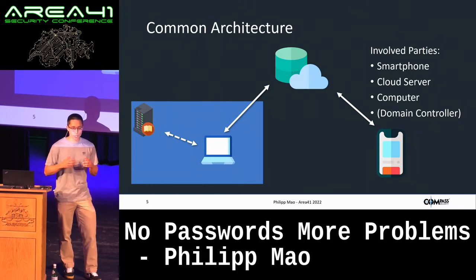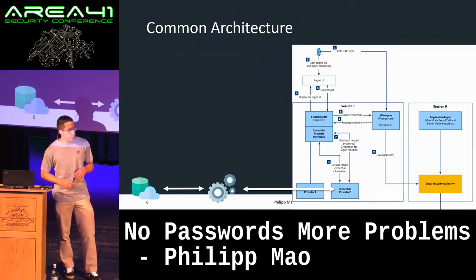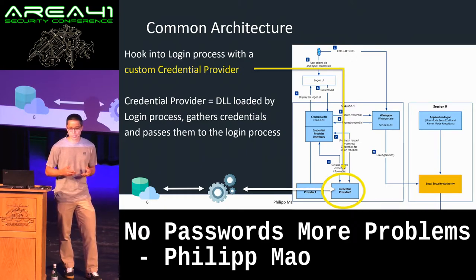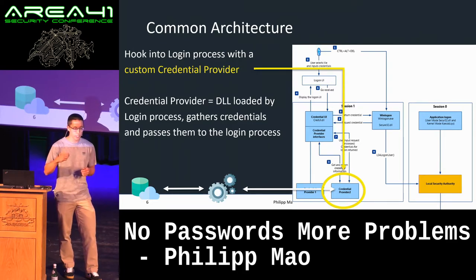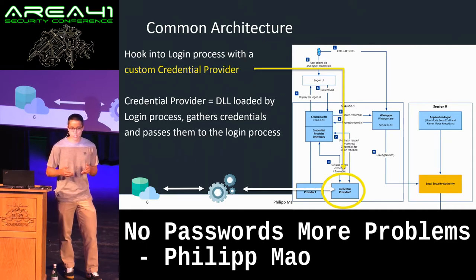When these products are installed on a computer, how do they execute their code during login? They install a custom credential provider — a DLL referenced by registry entries. Windows loads this DLL into every login process that is started. When such a product is installed, they install a credential provider, hooking themselves into every login process.